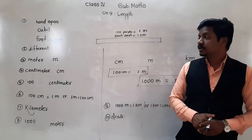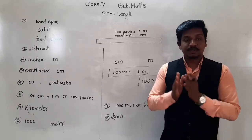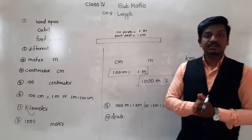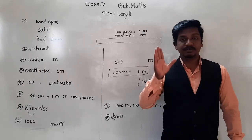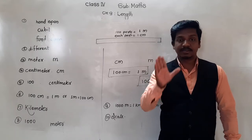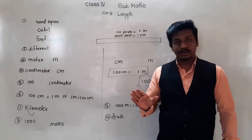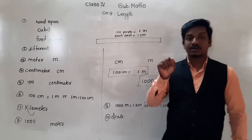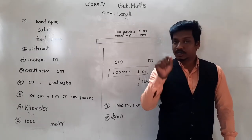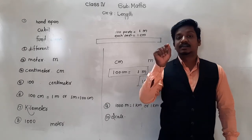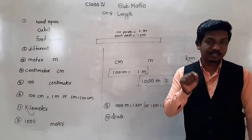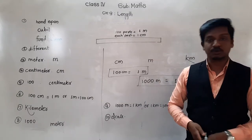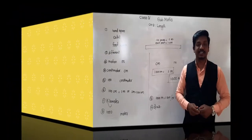Today you have to perform an activity. Measure the lengths of various objects available at your home — maximum 10 objects. Write the measurements on a page of your notebook, write your name on top, and send me photos today itself. Thank you for today and have a nice day.